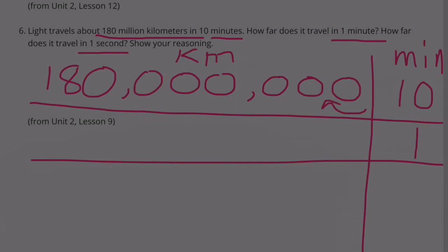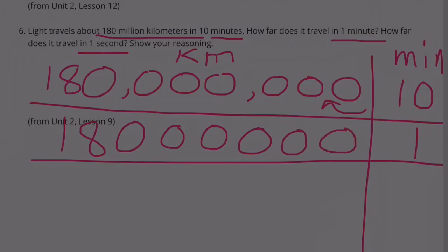We bring down the one, the eight, the zero, and the remaining zeros. So we should have 18 million kilometers traveled in one minute.